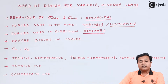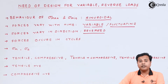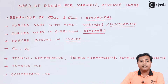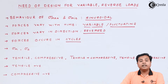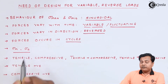Forces may vary in direction. Some forces are tensile and some are compressive, but in certain cases the same load keeps changing its direction — tensile in one moment and compressive in the next — and that's why they are called reverse loads. Forces that occur in cycles after equal intervals of time are called cyclic loads, and repeated load is one example.